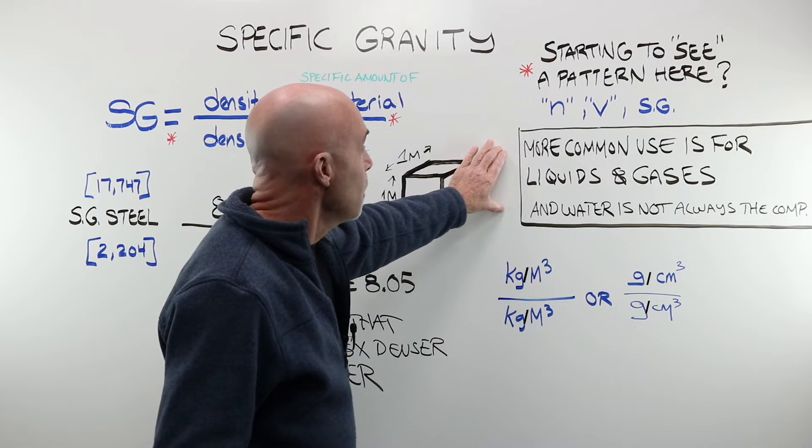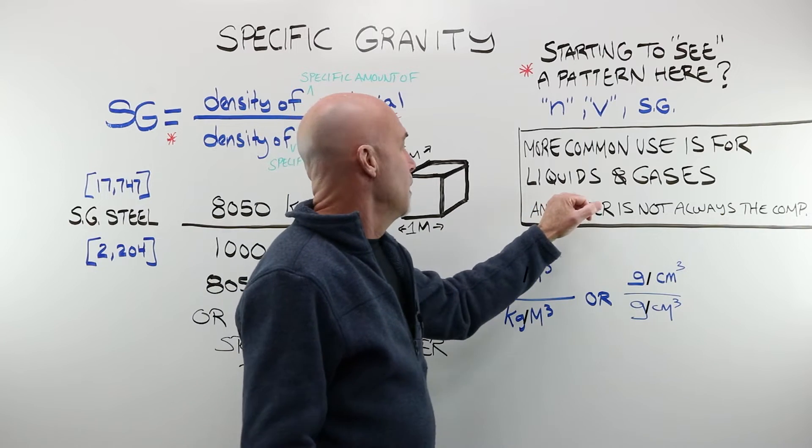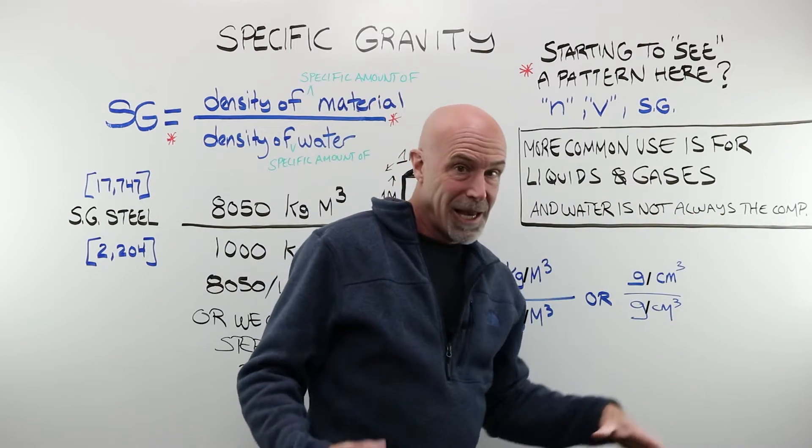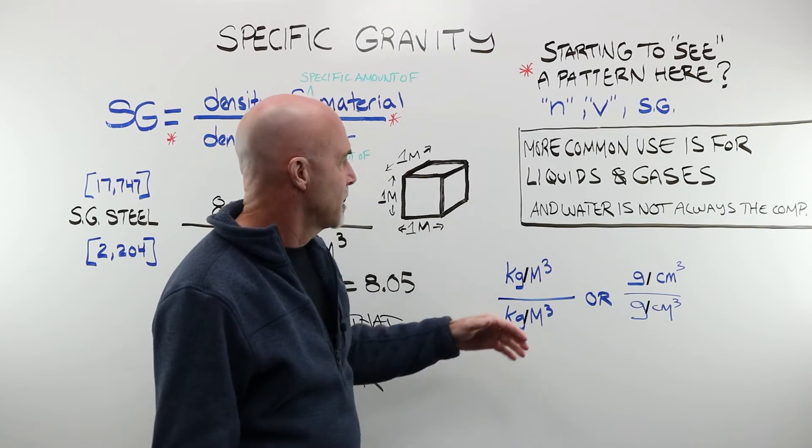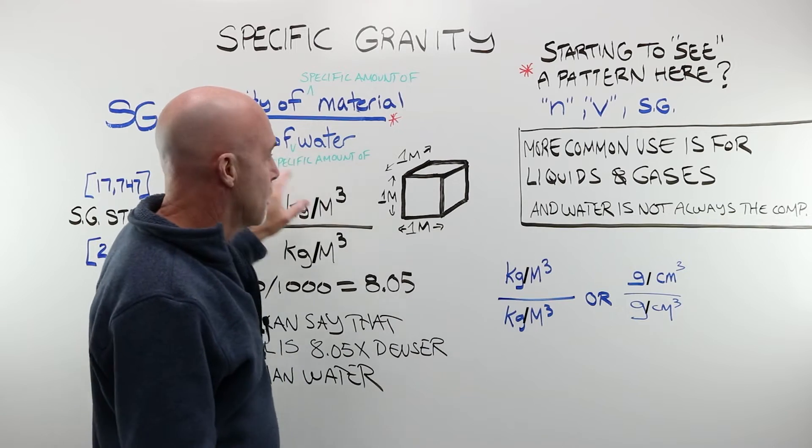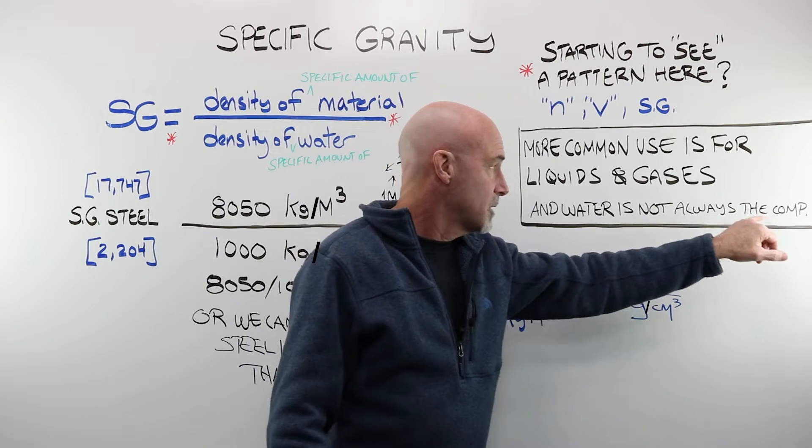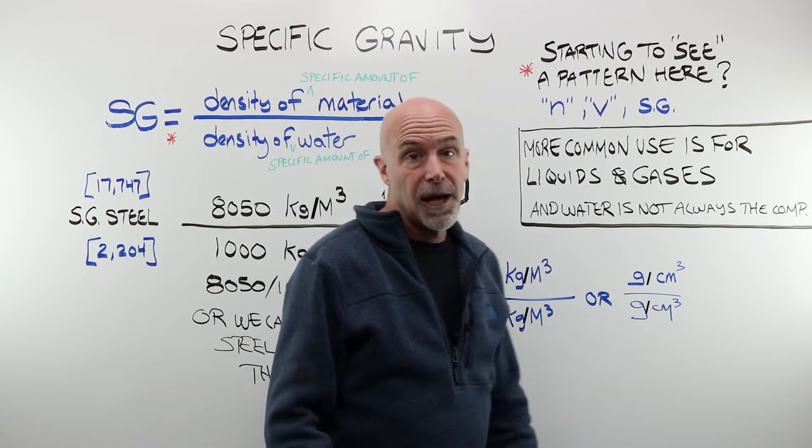In the real world, specific gravity is most commonly used for measuring the density of liquids and gases. Not so much solids. And water is not always the thing being compared to. It's often oils and alcohols. This is used in brewing and other scientific applications.